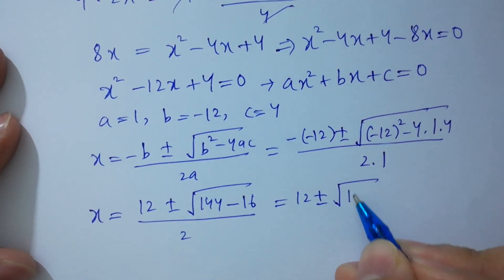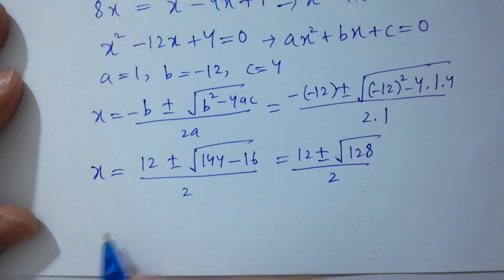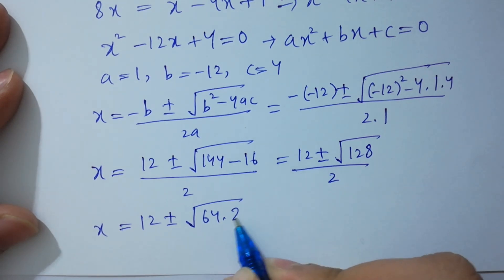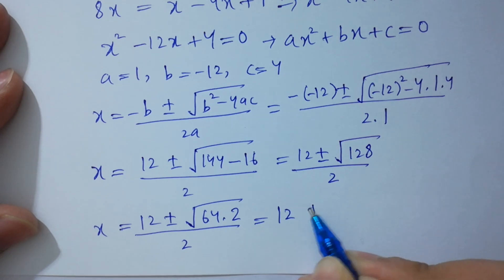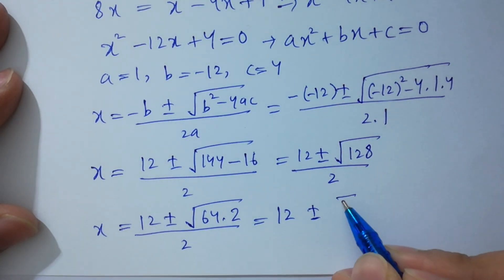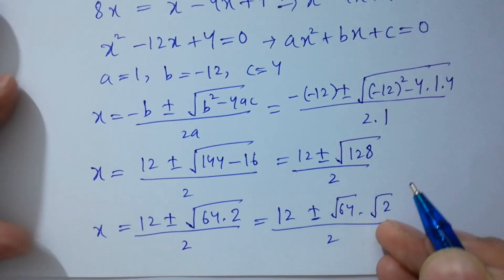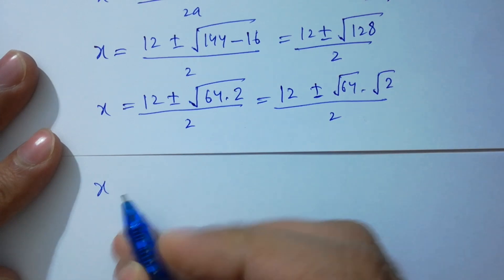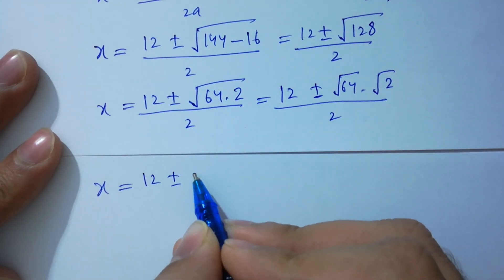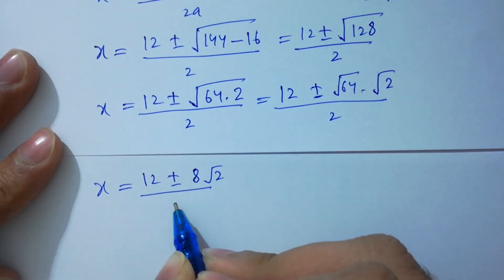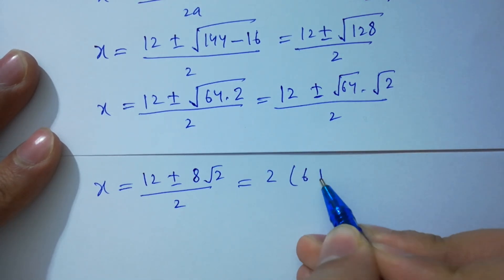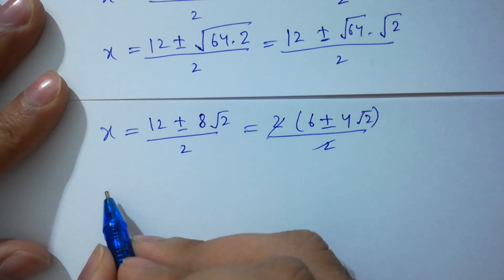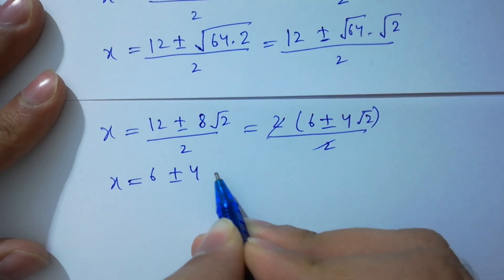That gives 12 plus or minus square root of 144 minus 16, which is 128, over 2. Simplifying square root of 128 as 8 square root of 2, we have 12 plus or minus 8 square root of 2 over 2. Factor out 2 from numerator and denominator: 2 cancels, giving x equals 6 plus or minus 4 square root of 2.